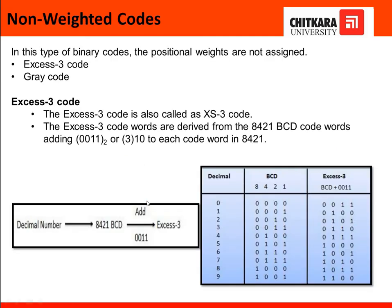So, next is the non-weighted code. Non-weighted code are of two types. One is the gray code. Another one is the XS3 code. XS3 code name itself explains that it gives the increase of the 3 in an existing code. And gray code is something different from this.